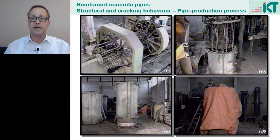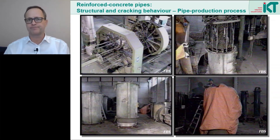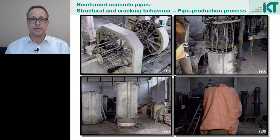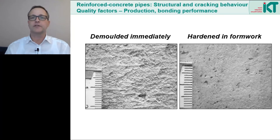Reinforced concrete pipes are therefore often hardened in the formwork, so they are only removed from the formwork about 24 hours after production. Important is also the curing of the concrete, which is for example supported by hooding the pipe. The water in the concrete must set with the binder and must not escape before. Here we see different pipe surfaces: on the left for a pipe that was immediately demoulded and on the right for a pipe that was able to cure 24 hours in the formwork.